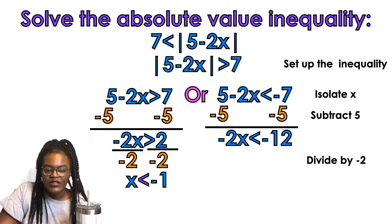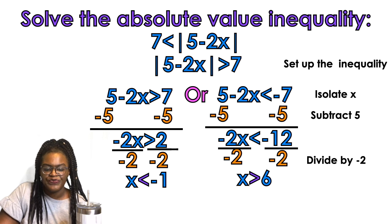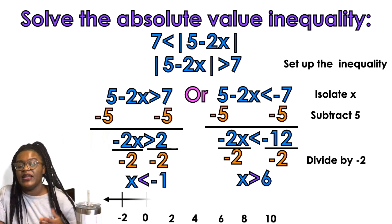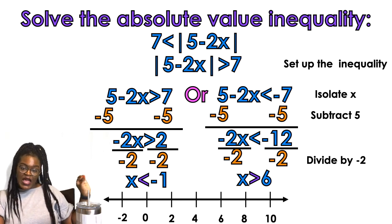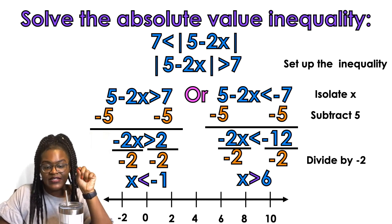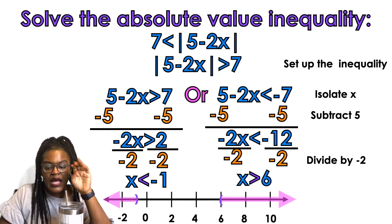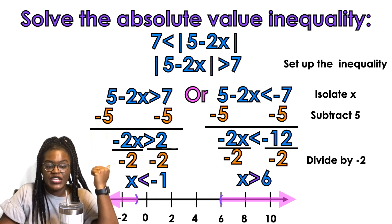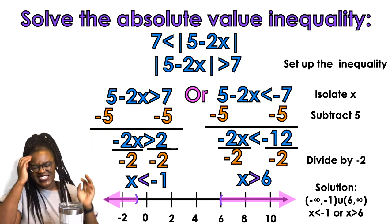Now do the other side — subtract five, then divide by negative two. Make sure we flipped our symbol because we divided by negative two. So x is greater than six on one side, and going the other direction on the other. We graph using parentheses because there are no equal-to symbols. One inequality goes this way and the other goes that way because it's an or inequality. And this is our solution in set notation and in interval notation.